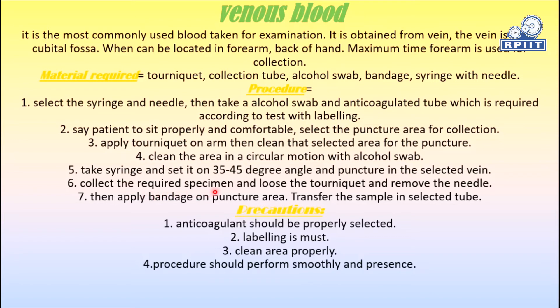Take the syringe and set it at a 35 to 45 degree angle, then puncture in the selected area. Collect the required specimen, use the tourniquet, and remove the needle. Then apply a bandage over the puncture area and transfer the sample into the selected tube.